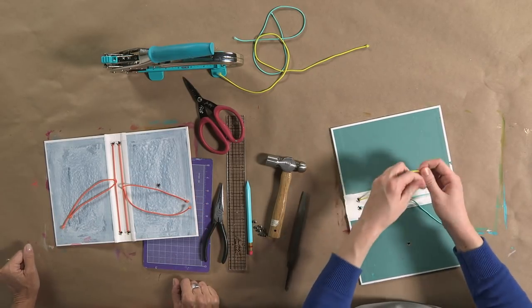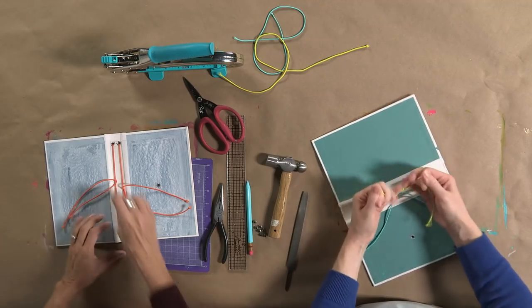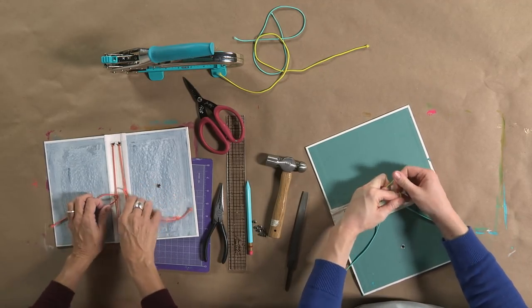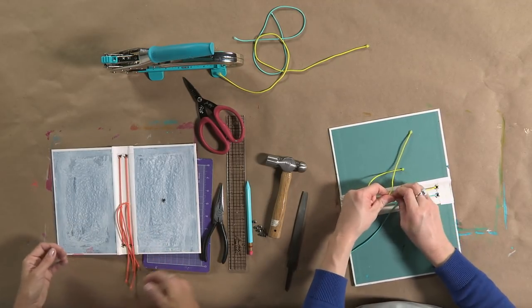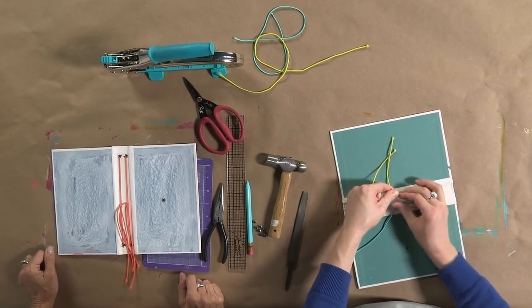And then, like I said, you can leave these or tie them. I usually leave them to the end just in case I want to untie them and rework them or I need to add any. And they also look really neat tied on the outside, like if you wanted to leave these for fringe and add some beads to them or anything like that.